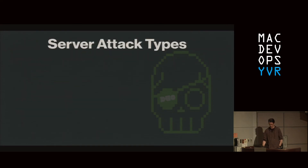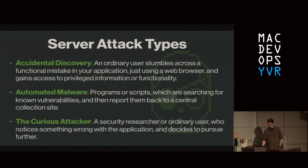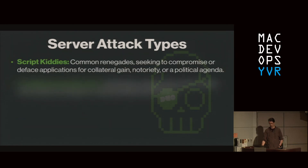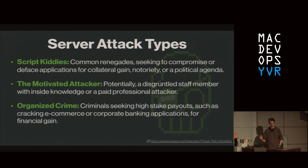There's a whole bunch of attack types — OWASP outlines these. Accidental discovery, someone found something while poking around. Automated malware — folks scanning all non-military IP ranges. Curious attackers who just want to see if they can get in. Script kiddies — basically people looking to make noise more than financial gain. Motivated attackers who have a specific goal. And organized crime, obviously looking for financial or other gain.